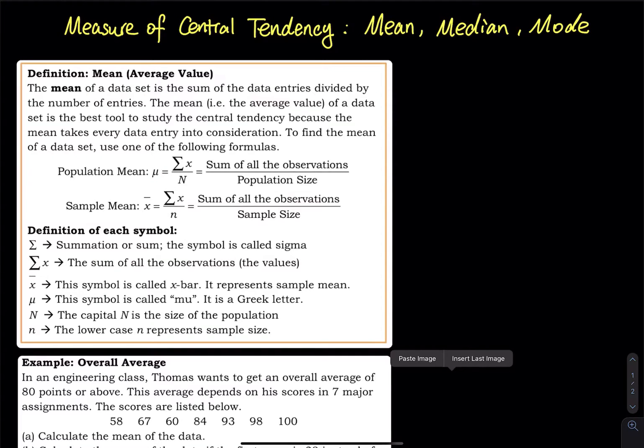In this video we are going to discuss measures of central tendency. There are three types in statistics: mean, median, and mode. First, the mean is about value, median is about position, and mode is about frequency.